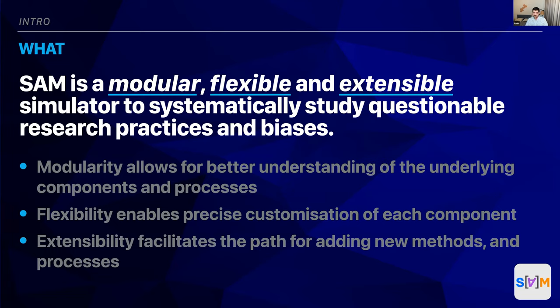Modularity allows us to understand the underlying components and processes. Think about a car analogy. If you want to change the wheel to different tires, if you know that your car has a 16-inch tire, you could use another 16-inch tire and see what effect it has on the torque and acceleration. As long as they fit, you move them around without any confusion and they work. Flexibility means you have precise control over customization of each component — you could precisely measure and change the air pressure and see what that does. Extensibility means there's always room to add new methods and processes.